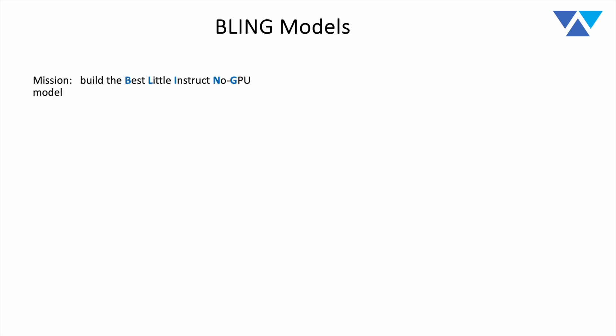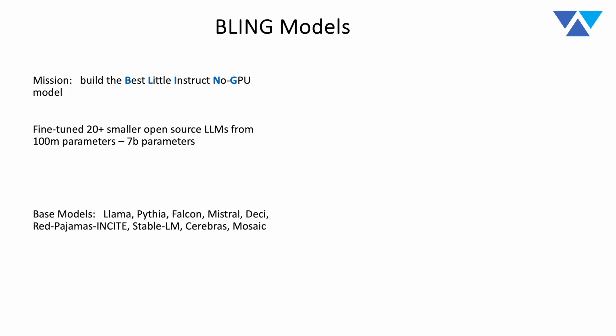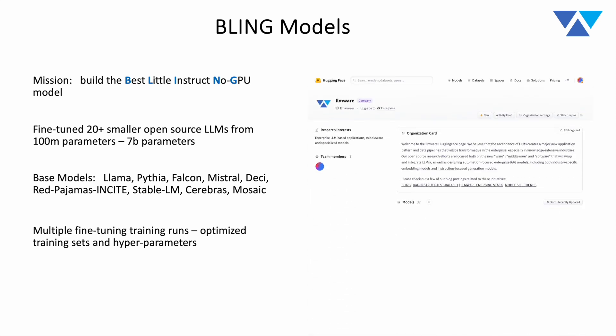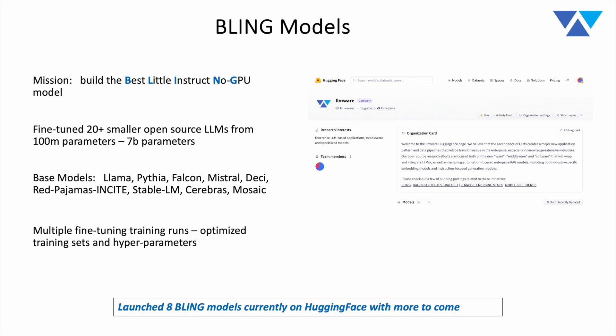Seeing a relative gap in smaller RAG instruct-trained models, we set out to build the best models between 1 billion and 3 billion parameters that could be run without a GPU. We took 20-plus smaller open-source LLMs ranging from 100 million to 7 billion parameters, looked at all the leading base models, and brought them through multiple rounds of fine-tuning using a variety of proprietary curated datasets. We tried multiple cuts, distilling in different ways and optimizing training hyperparameters. We launched this project called Bling on our Hugging Face page under LLMware — eight models are currently in the repository, all available with two lines of code to pull down and run locally.